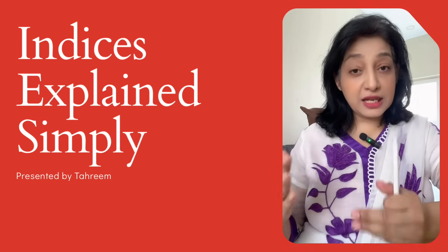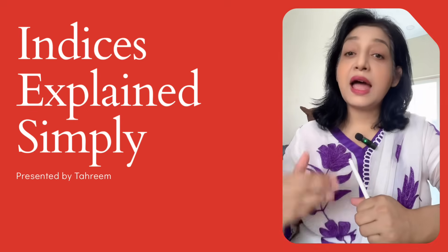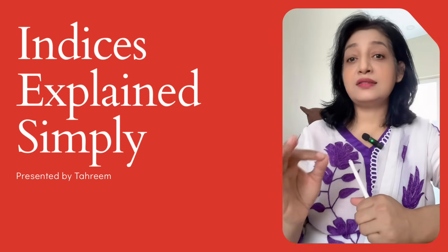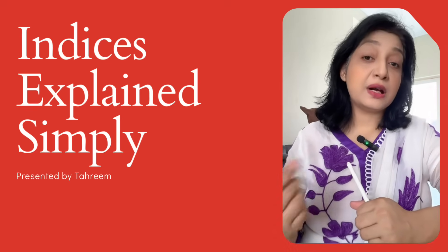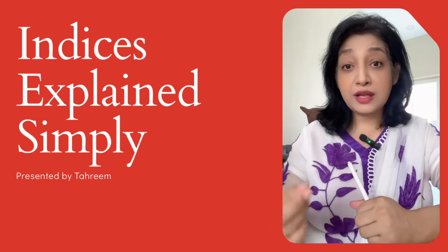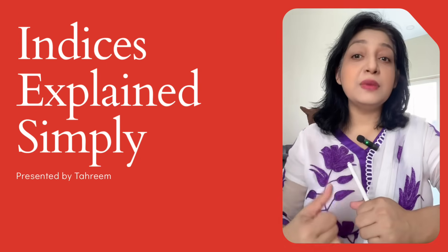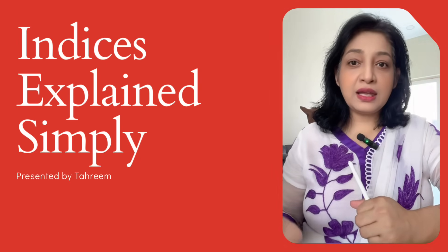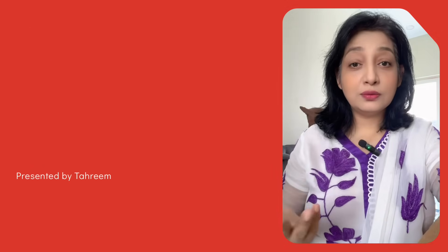Number one: meaning of index or exponent. The index or power tells us how many times a number is multiplied by itself. For example, 2 raised to power 4 means 2 multiplied 4 times. Here, 4 is the index of 2.